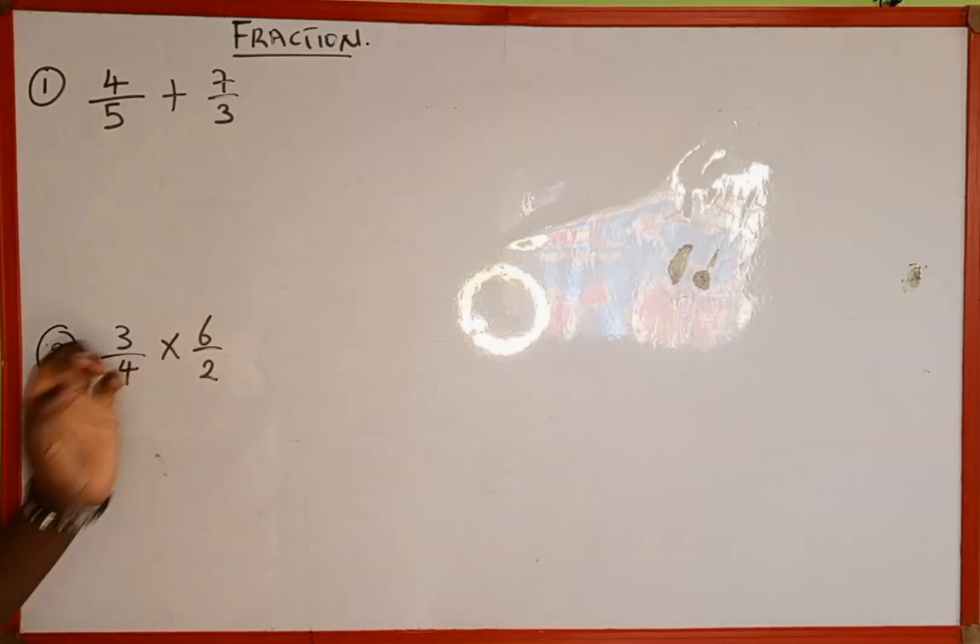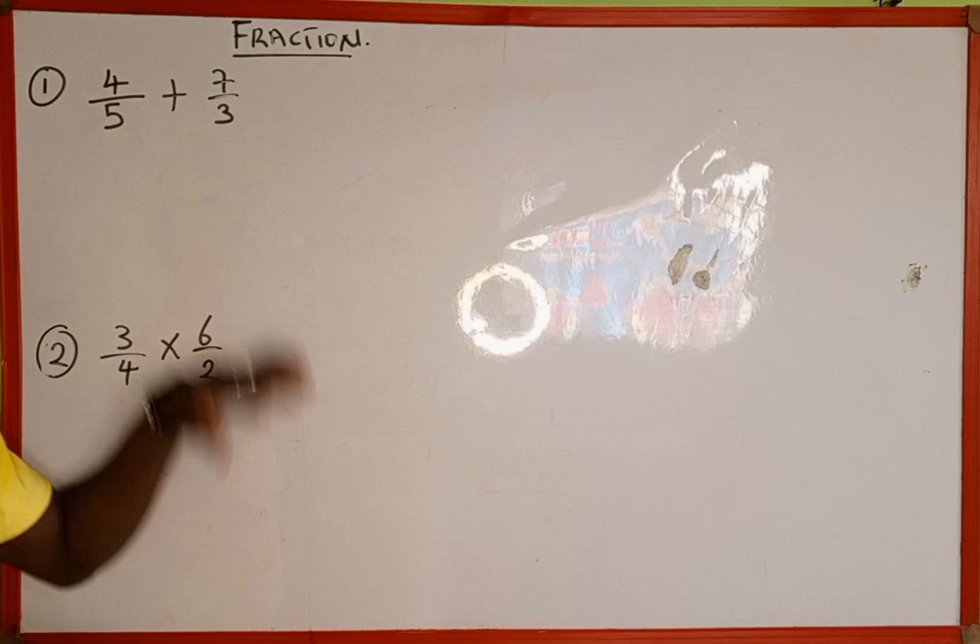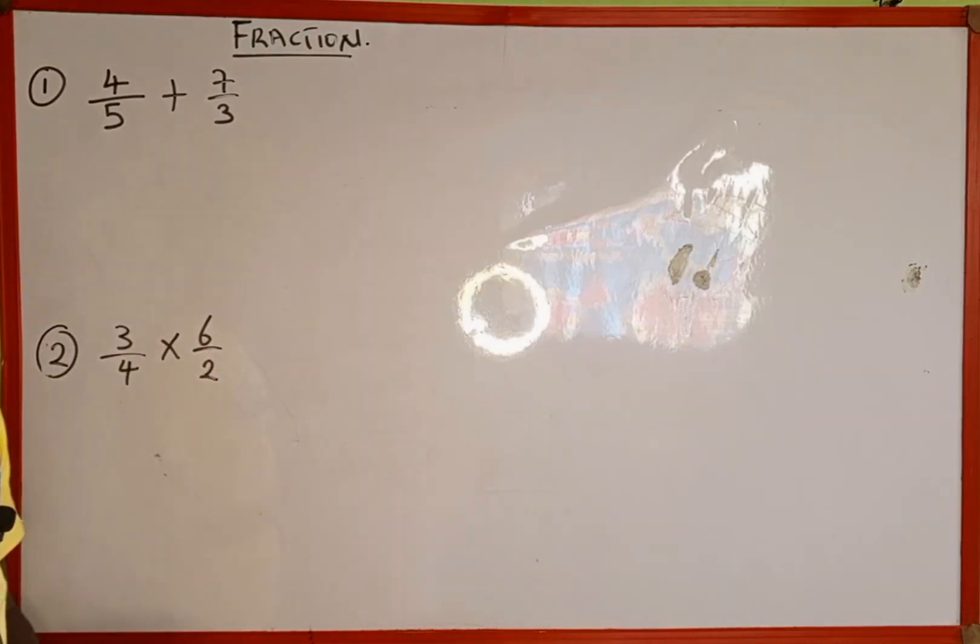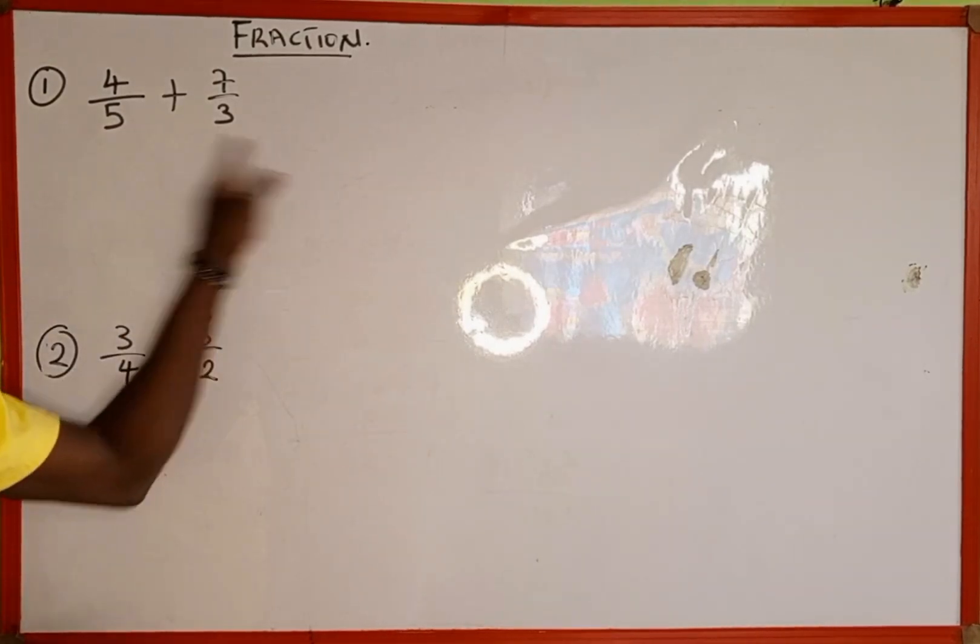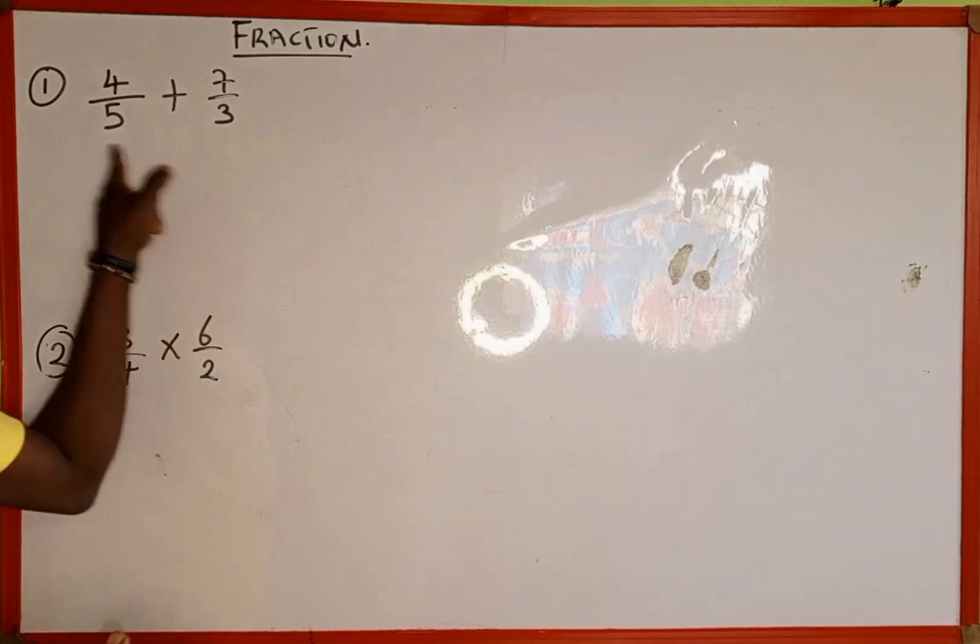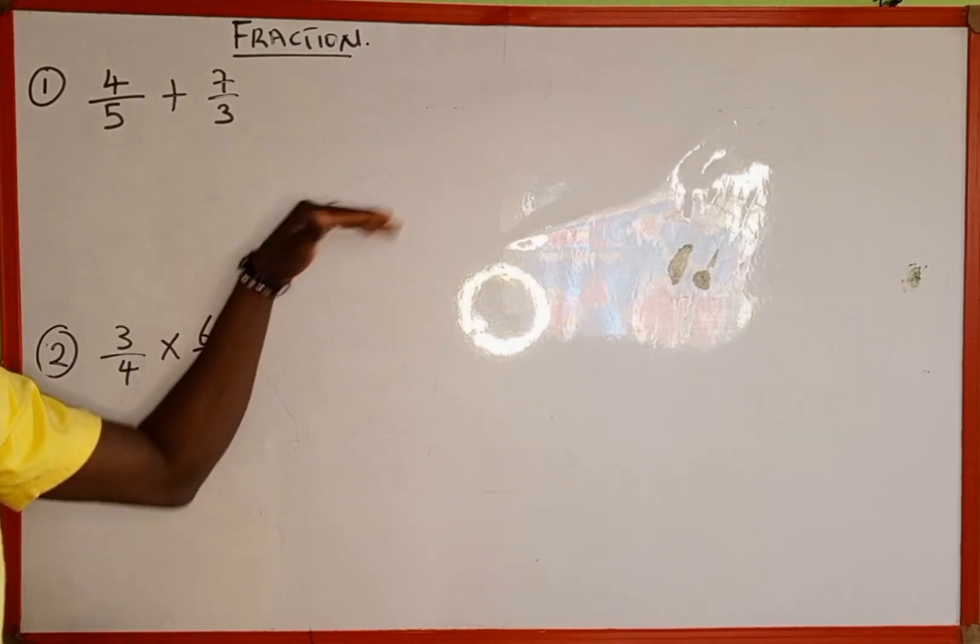When you are adding fractions, the first thing we're going to do is find the LCM of the denominators. The denominators here are 5 and 3. The LCM of 5 and 3, since they have no common factor, we're going to multiply the two denominators.